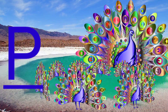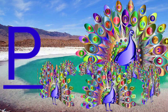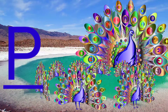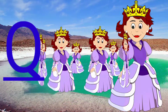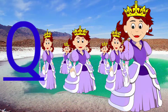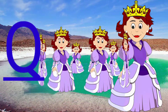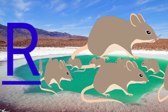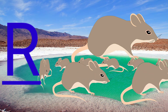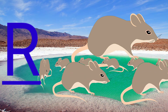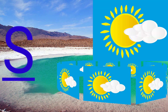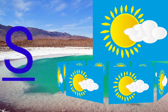P for peacock, Q for queen, R for red, S for sun.